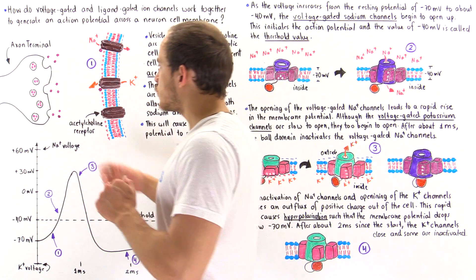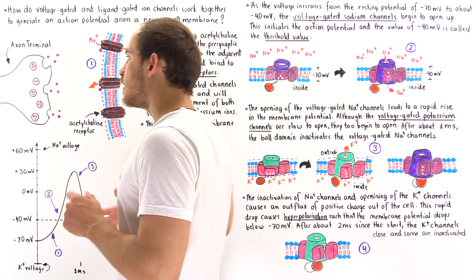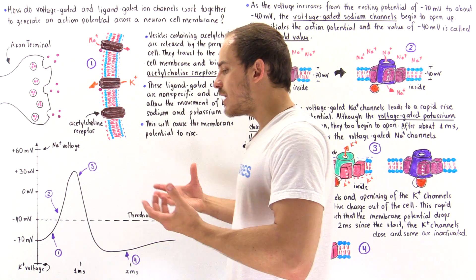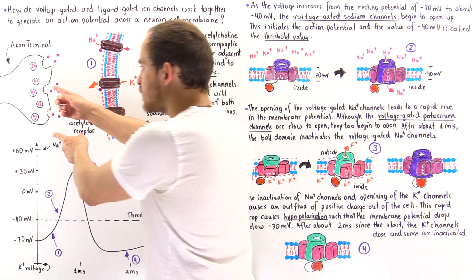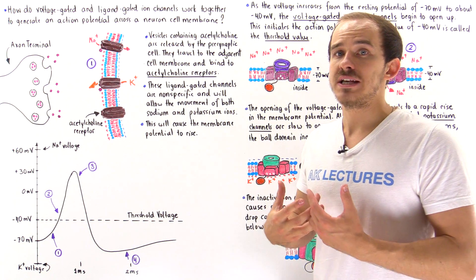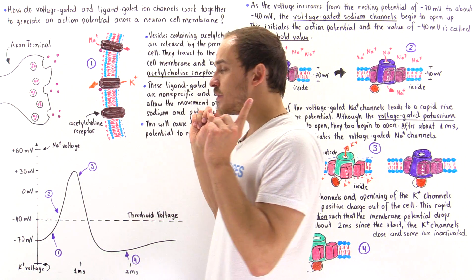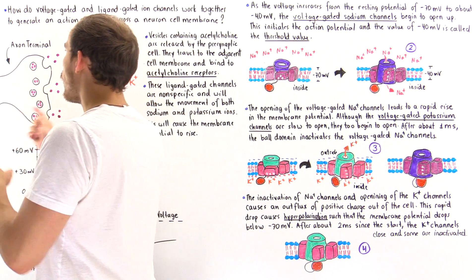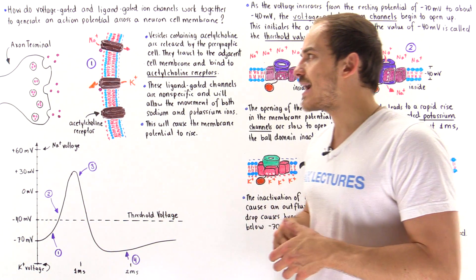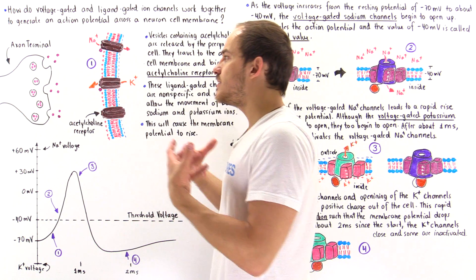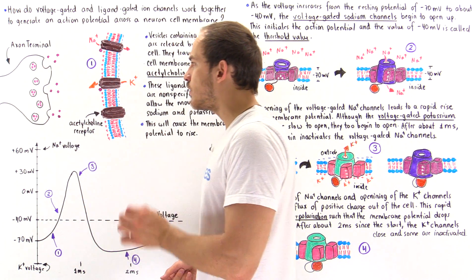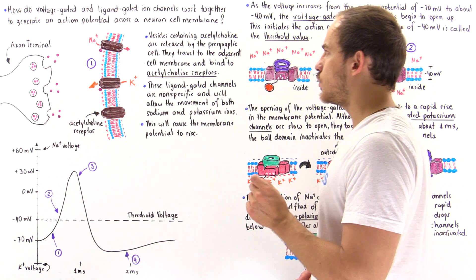Let's look at the axon terminal of the presynaptic nerve cell. Along the axon hillock of this presynaptic nerve cell, an action potential is generated. That action potential propagates all the way to the axon terminal, and once there, it stimulates the release of hundreds of vesicles that carry acetylcholine molecules.